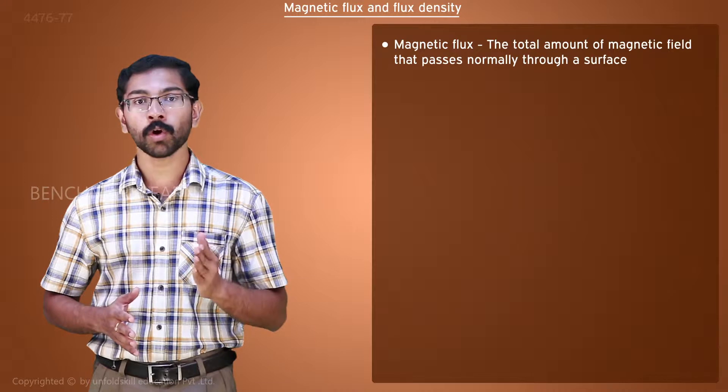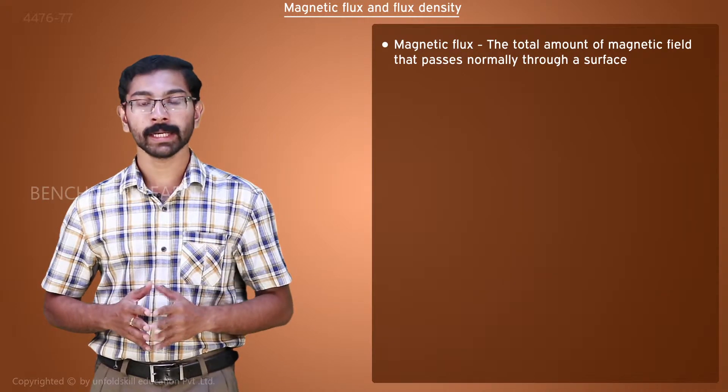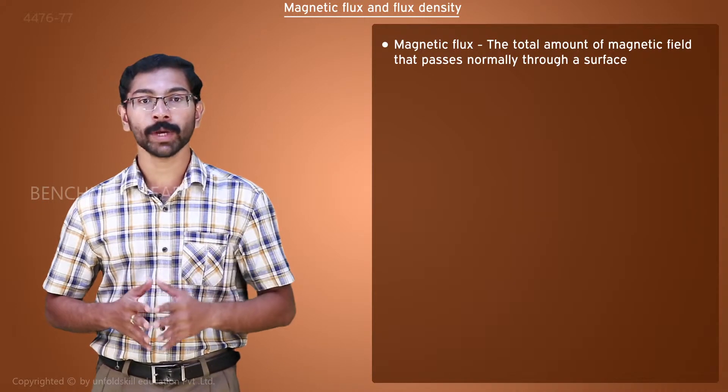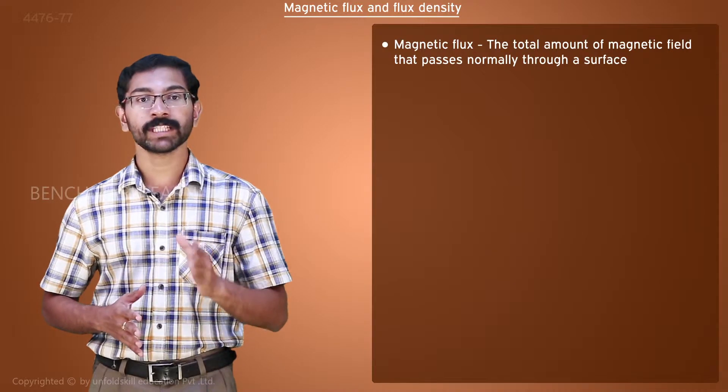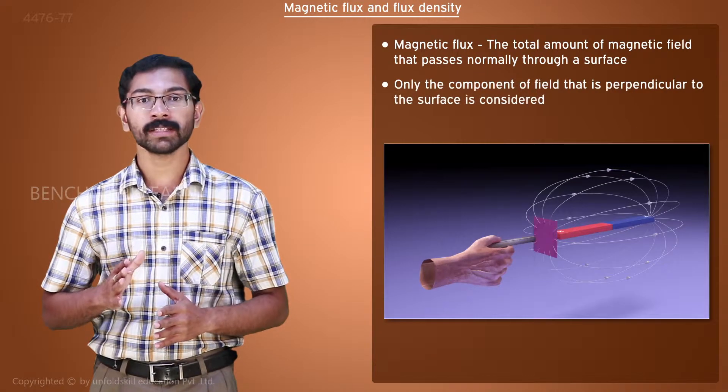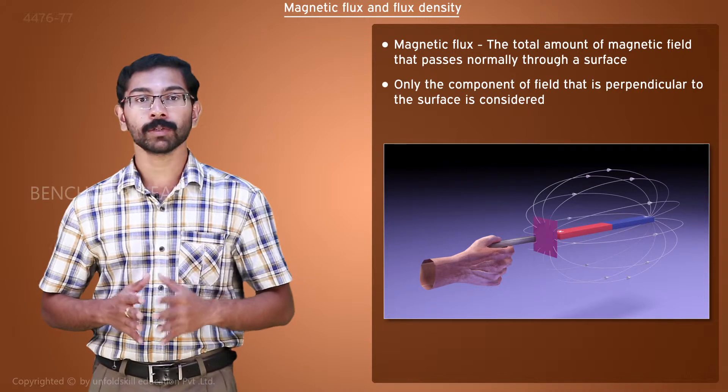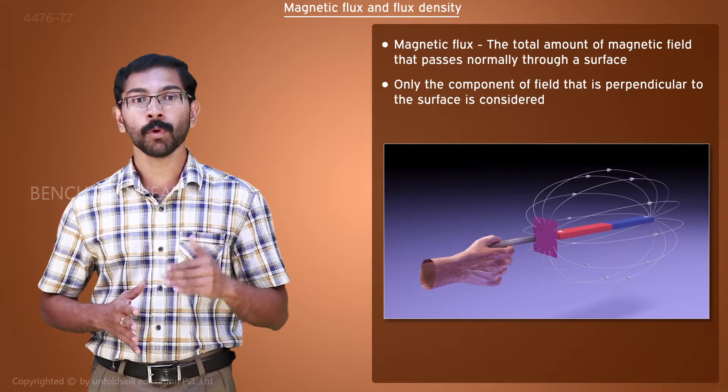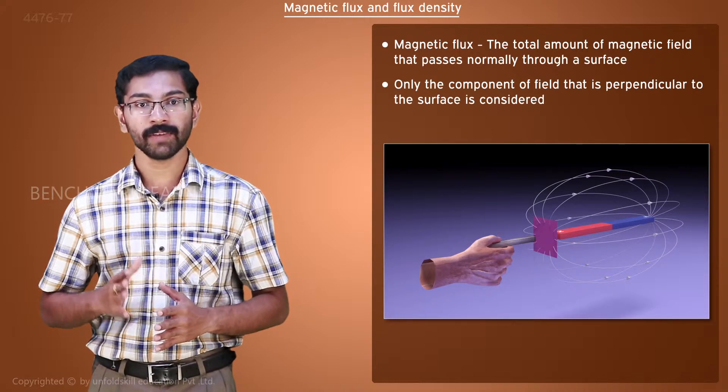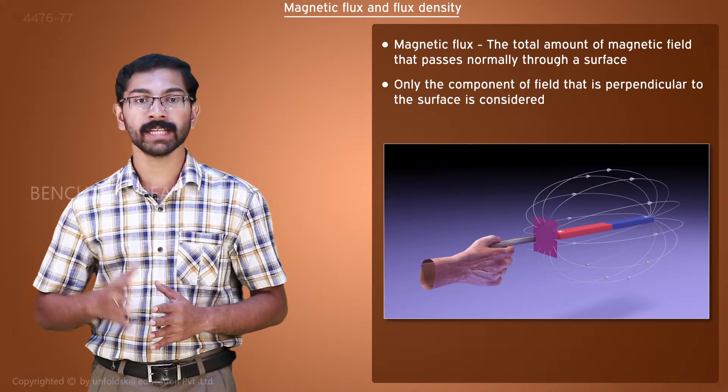Magnetic flux is the total amount of magnetic field that passes normally through a surface. For measuring flux, we are only considering the component of field that is perpendicular to the surface. If more field is present in a region, we can say that there is more flux in that region.